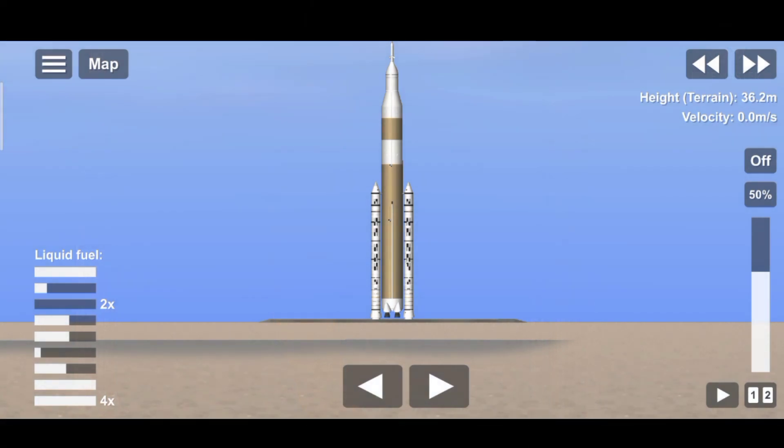Sitting on the launch pad, the entire rocket, fully fueled, weighs just over 6 million pounds, 5.2 million of which is just the fuel.